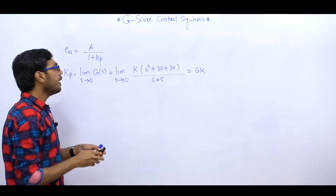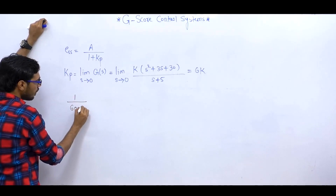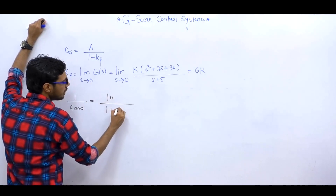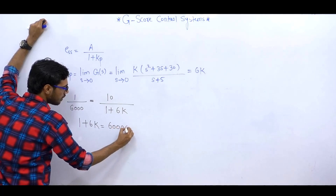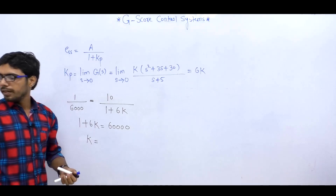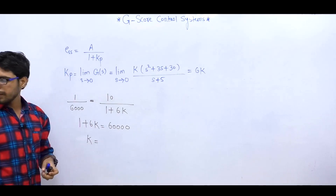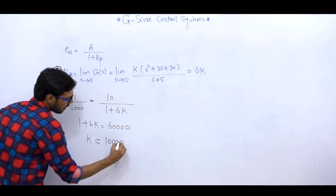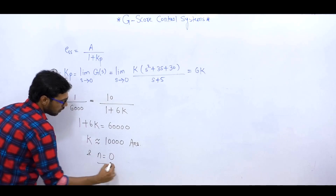KP निकाला: limit S tends to 0, G(S) — G(S) पता है तो KP मिल गया। A पता है, STEADY STATE ERROR कितना था — 1/6000। तो: 10 divided by (1 + KP) = 1/6000, KP = 6K। यह होगा 1 + 6K = 60,000। K approximately 10,000 आएगा — (60,000 − 1) / 6 ≈ 10,000। K approximately 10,000 आ गया।